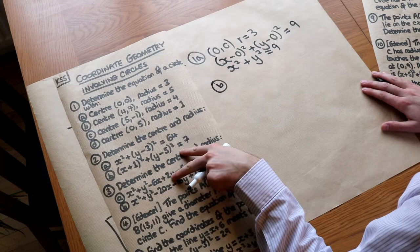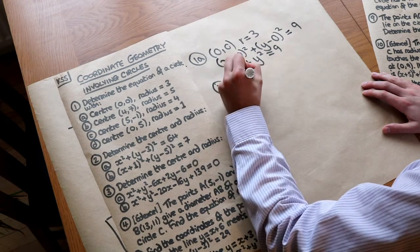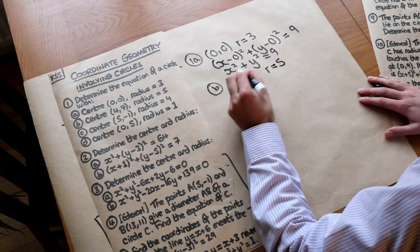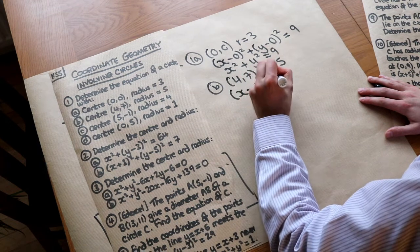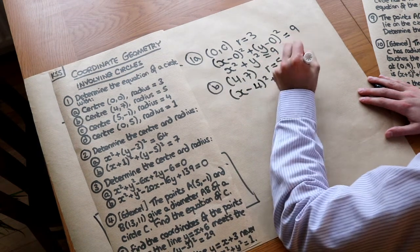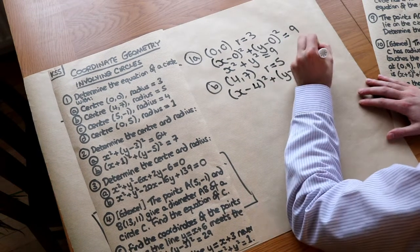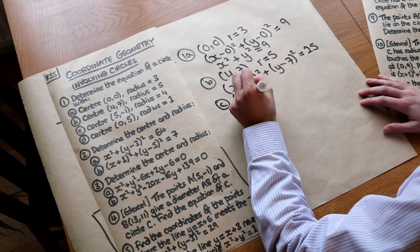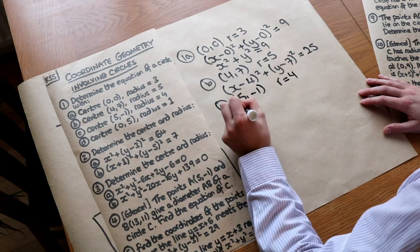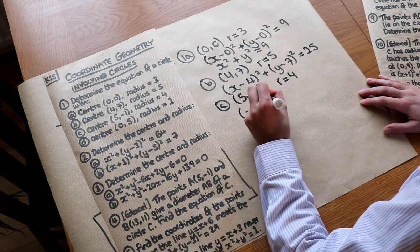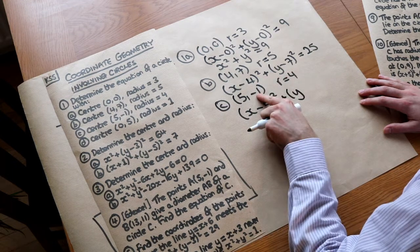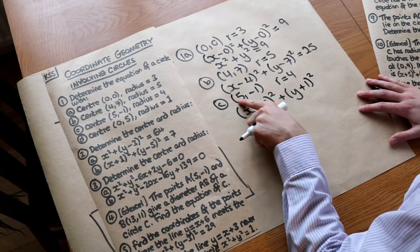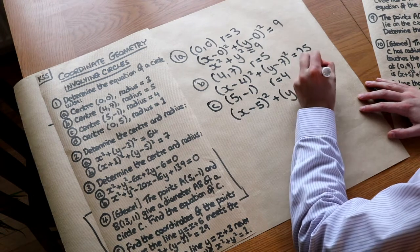For part B with centre (4, 7) and radius 5: substituting into our equation gives (X minus 4) squared plus (Y minus 7) squared equals 25. For part C with centre (5, minus 1) and radius 4: we get (X minus 5) squared plus (Y minus minus 1) squared, which becomes (X minus 5) squared plus (Y plus 1) squared equals 16. The sign of the centre coordinates get negated when inserted.